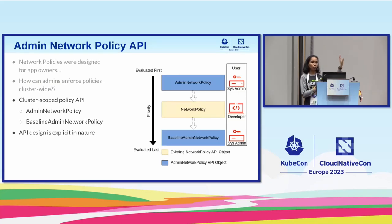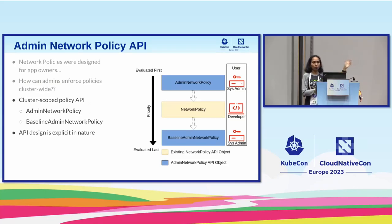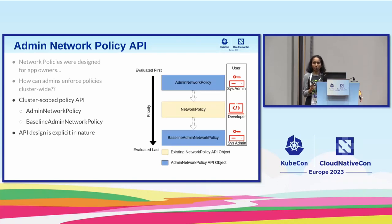The API defines two kinds of CRDs: admin network policy and baseline admin network policy. Admin network policy rules are evaluated first with higher precedence. If no match is found there, you fall down to network policies. If no match is found there either, baseline admin network policy acts as a default guardrail across the cluster. You can have at most one baseline admin network policy — it's just a default fallback.